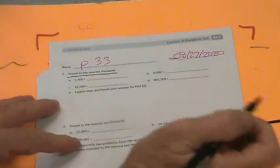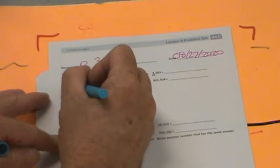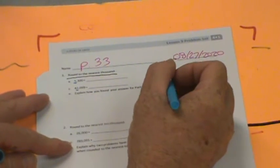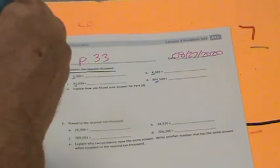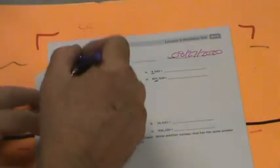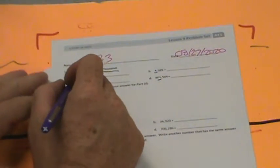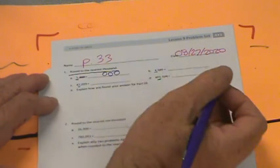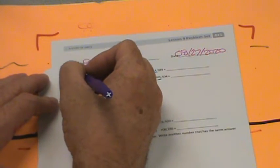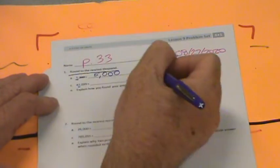Round to the nearest thousand. Let's just go right down the line here and put a little underline under the thousands. So where would we round 5,300 to? Think about the midway point we know is 500. So this is less than 500, so I'm going to put my zeros there because those don't matter. And this is going to stay a 5 because 300 is less than 500.